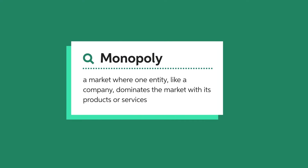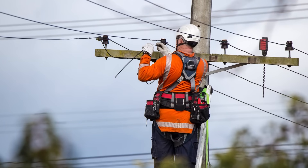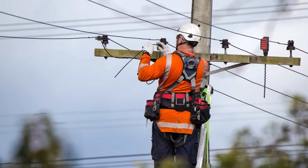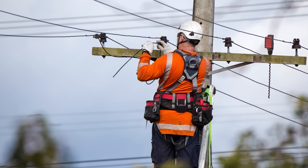On the other end of the spectrum, some markets have many buyers but only one seller. This gives the seller the pricing power, while the buyers are still price takers. In this situation, the seller is referred to as a monopoly. For example, utility companies, such as your electricity provider, may be a monopoly.